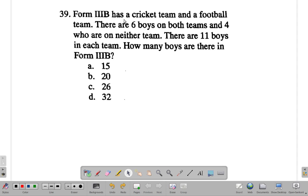You have Form 3B, a cricket and a football team. Six boys on both teams and four on neither. See what this is all about. So, both teams have six. So, let me make a Venn diagram and you have six of them here.